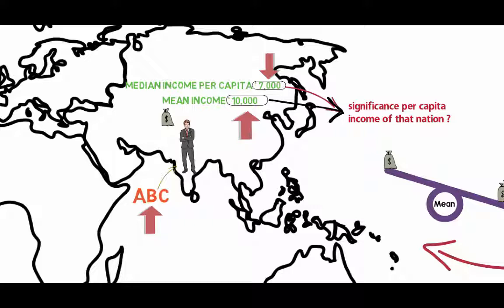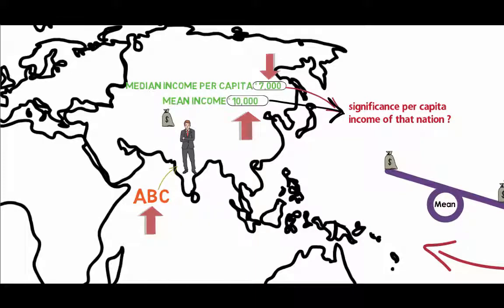Since the median is 7,000, it indicates that half of the population earns less than 7,000, which is lesser than the mean of the nation as well. It shows that there is inequality in distribution of wealth in the nation. A small portion of the nation gets the major chunk of the total income generated in country ABC.